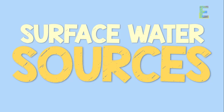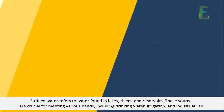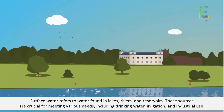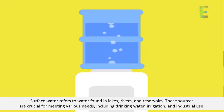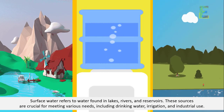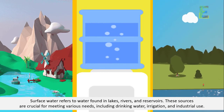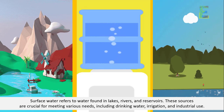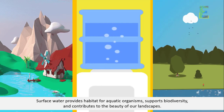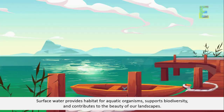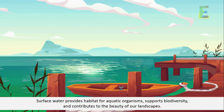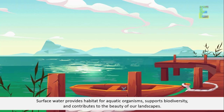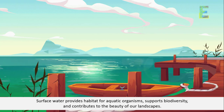Surface Water Sources. Surface water refers to water found in lakes, rivers, and reservoirs. These sources are crucial for meeting various needs, including drinking water, irrigation, and industrial use. Surface water provides habitat for aquatic organisms, supports biodiversity, and contributes to the beauty of our landscapes.